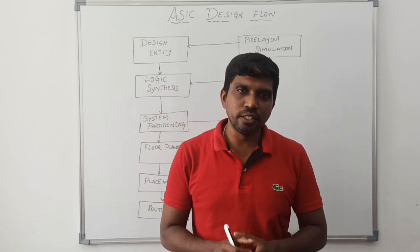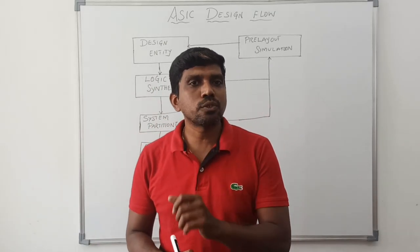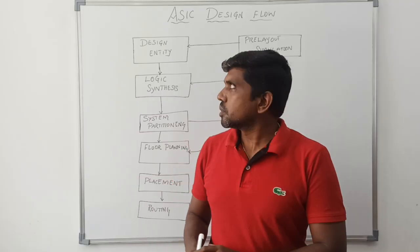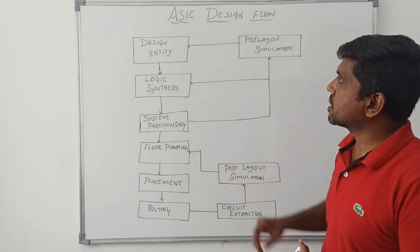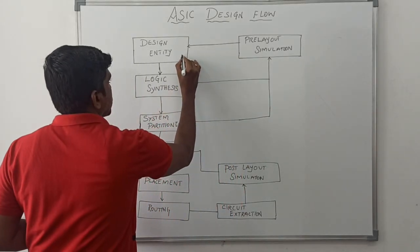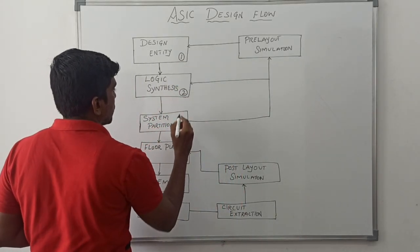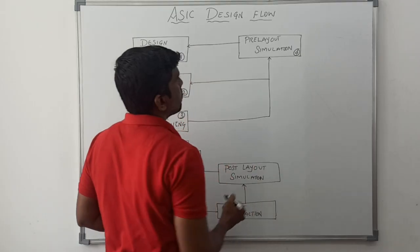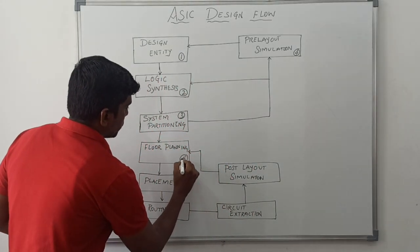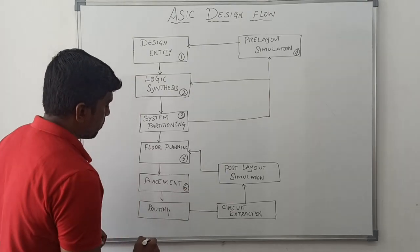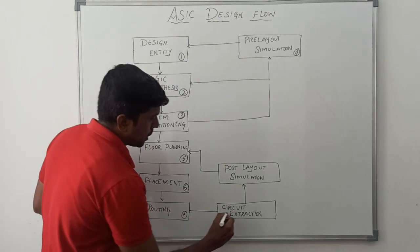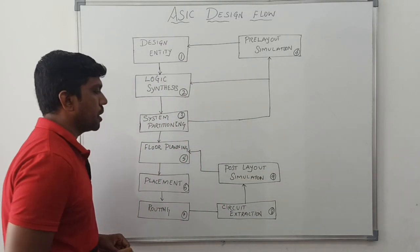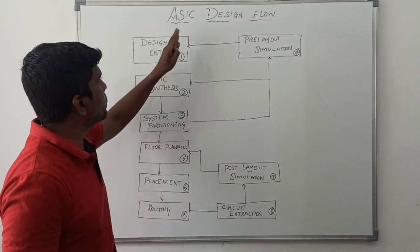In this class I am going to teach about ASIC design flow. ASIC stands for Application Specific Integrated Circuit. The ASIC design flow has multiple stages: first is design entity, second is logic synthesize, third is system partitioning, fourth is pre-layout simulation, fifth is floor planning, sixth is placement, seventh is routing, eighth is circuit extraction, and ninth is post-layout simulation.